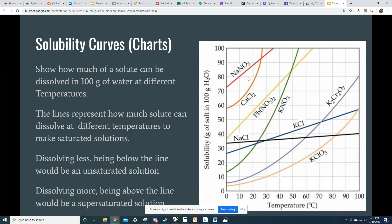And so what you're seeing here is lots of different lines with different chemical substances on them, and they tell us how much of that particular solute I can dissolve at different temperatures.